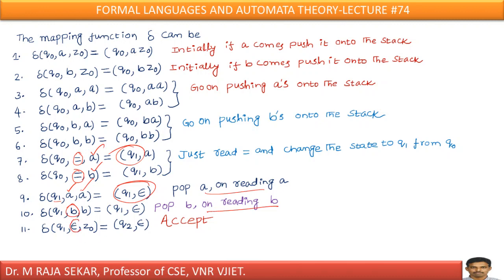Once all, means string is completed. If you read epsilon, Q1 epsilon means string is completed. Z naught is top of the stack. Then I can say, Q2 comma F here. Let me say, Q2 is final state. Q2 is, I must write this one. Q2 is final state.